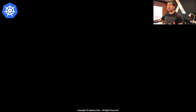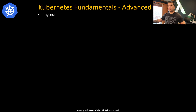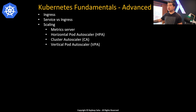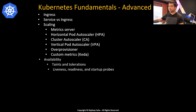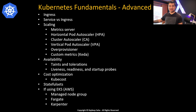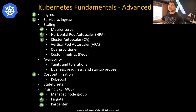After basic fundamentals, move into Kubernetes fundamentals advanced: ingress, service versus ingress, Kubernetes scaling — including metric server, horizontal pod autoscaler, cluster autoscaler, vertical pod autoscaler, over-provisioner, and custom metrics using KEDA. Then learn availability — taints and tolerations, liveness, readiness, and startup probes. Then cost optimization using the tool Kubecost, and stateful sets. If you are using Elastic Kubernetes Service from AWS, also learn managed node group, Fargate, and Karpenter. Not all of these are required for interviews — the ones marked with the green Kubernetes logo are the must-knows.